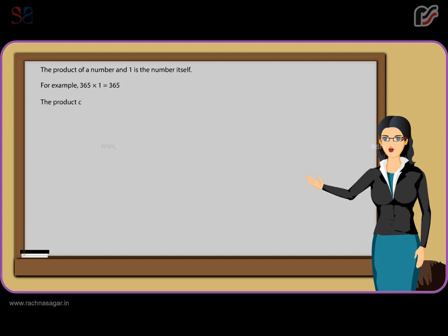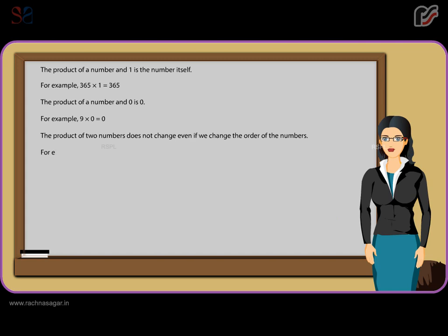The product of a number and 0 is 0. For example, 9 x 0 is equal to 0. The product of two numbers does not change even if we change the order of the numbers. For example, 202 x 2 is equal to 404, or 2 x 202 is equal to 404.